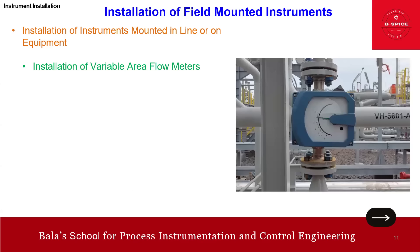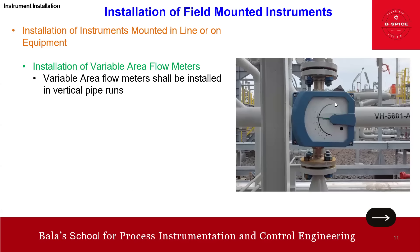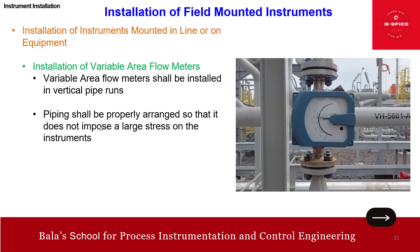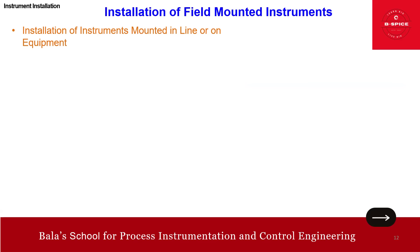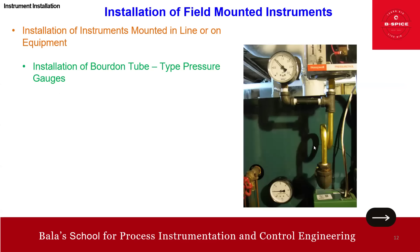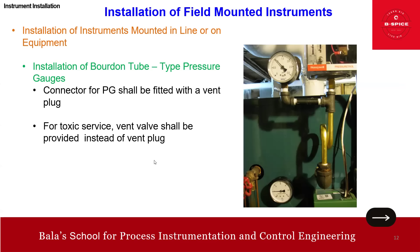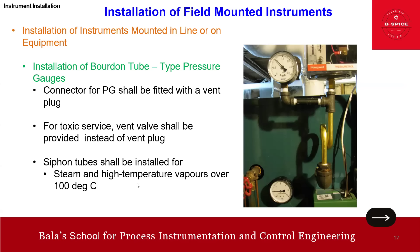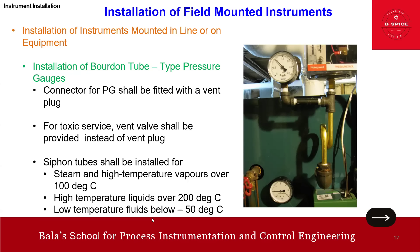The variable area meter, also called a rotameter, is very simple and is installed in vertical pipe runs. Piping shall be properly arranged so that it does not impose large stress on the instrument. For pressure gauges (Bourdon tube type): the connector for the pressure gauge shall be fitted with a vent plug, and for toxic service a vent valve shall be provided. A siphon shall be used for steam and high-temperature vapor above 100°C, for high-temperature liquid over 200°C, and also for low-temperature fluids below minus 50°C.